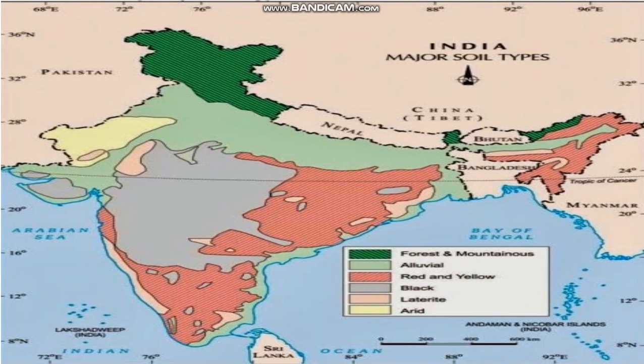Next is black soil. In grey color on the map, you are looking at black soil. It is found in the Deccan plateau and this type of soil is found in Gujarat, Maharashtra, Karnataka, etc. This soil has an ability to retain moisture and becomes sticky when wet. It is good for growing cotton — a large amount of cotton is grown in our country with the help of this soil. That is why this soil is also called cotton soil.